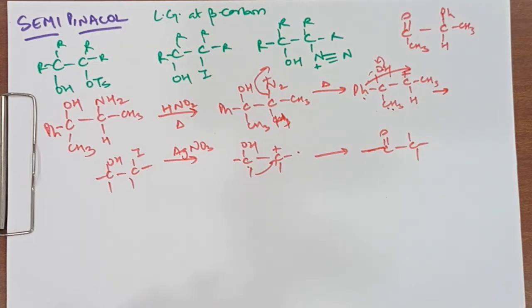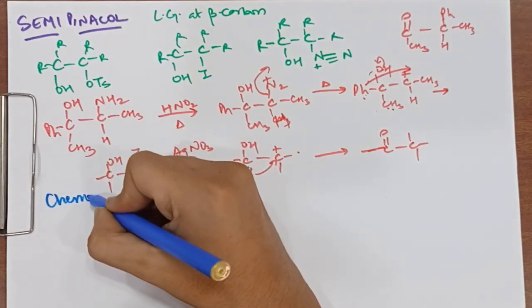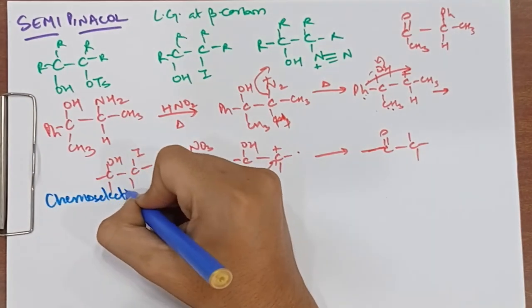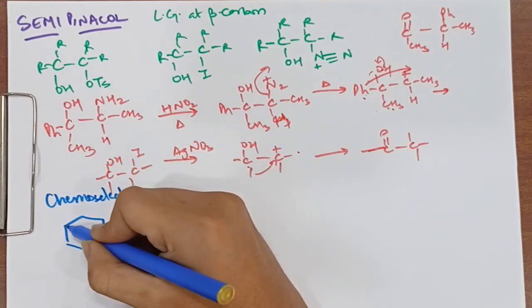These are chemoselective reactions. Chemoselective is the selectivity of this reaction. Like we have a reactant which I have made earlier.